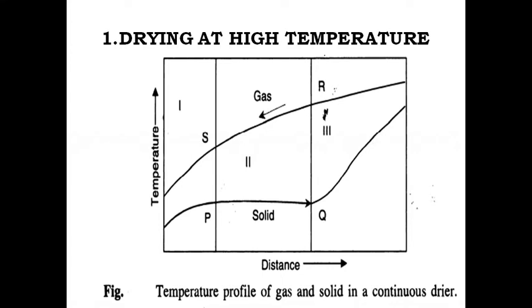In zone three, unsaturated surface drying and the removal of bound moisture takes place. Bound moisture is water that cannot evaporate easily and there is pressure on such type of water. There is a short increase in the temperature of the solid. Zone two represents a major portion of the dryer.